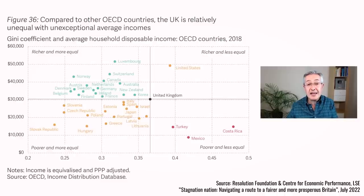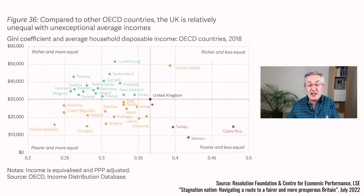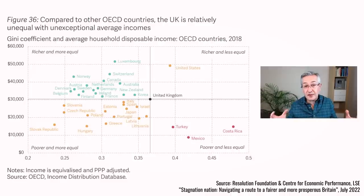If we compare the UK against other OECD countries — generally the wealthier nations — with inequality on the x-axis and average household disposable income on the y-axis, you could characterize the UK as having a middling income of about $30,000 in disposable income per household, while at the same time having very unequal wealth. In fact, only four countries in the OECD have greater inequality. That summarizes the short-term and longer-term structural problems which the UK faces.